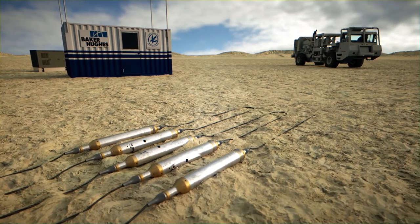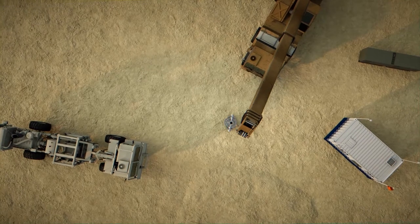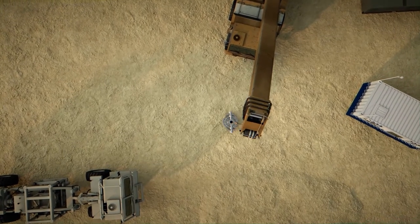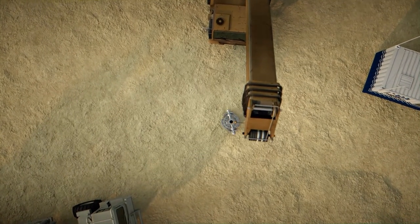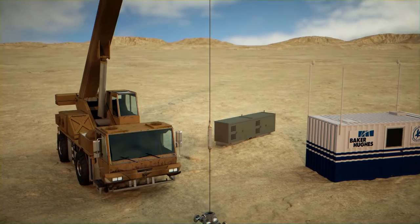A VSP utilizes geophones that can detect very small movements of the earth. Rather than using an expensive rig, these receivers can be rapidly deployed with a standard crane.